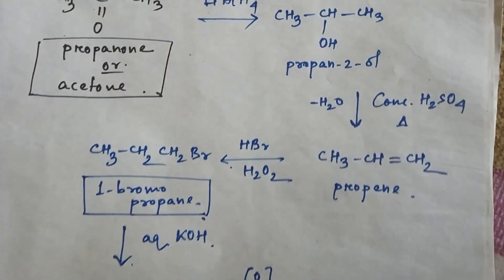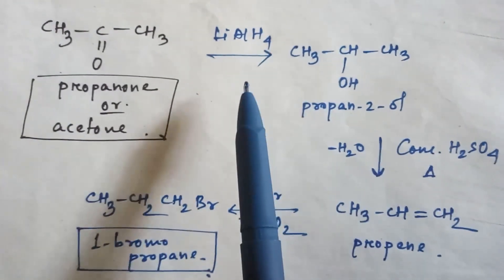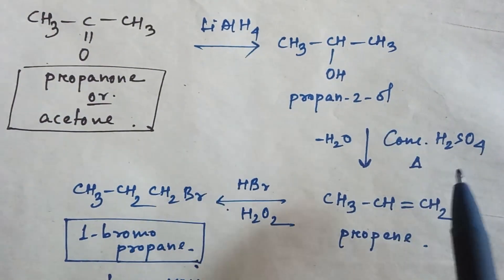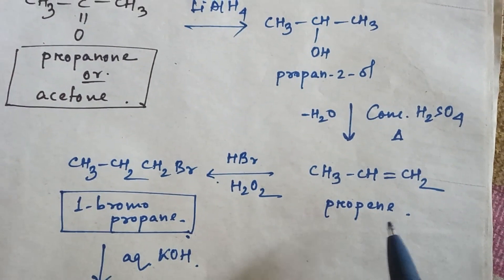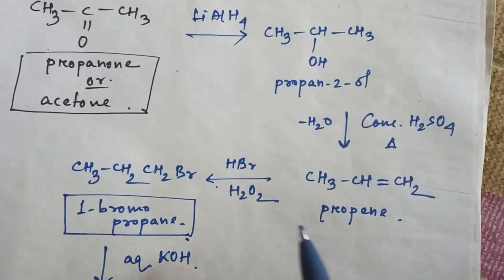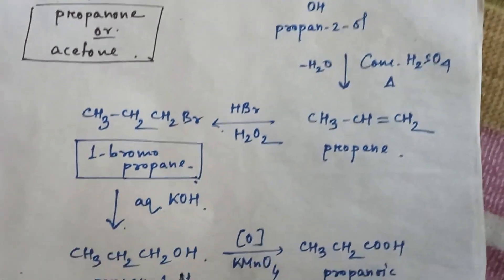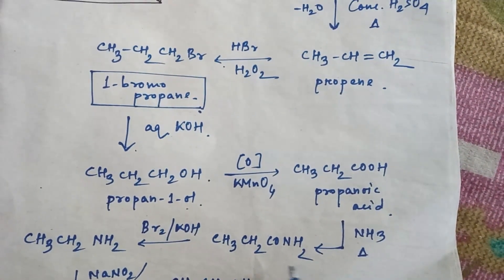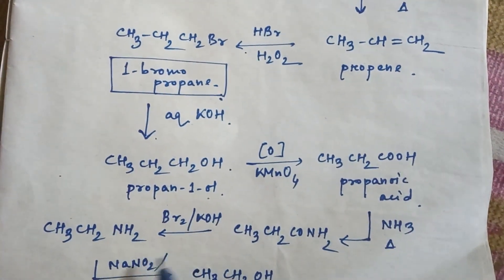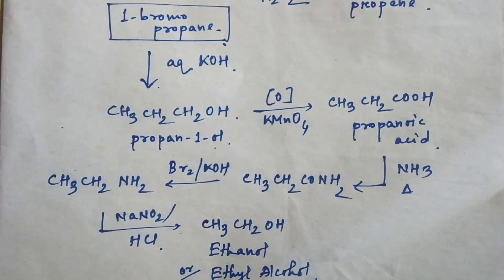So this is the reverse process from acetone to ethanol. First from acetone, use lithium aluminum hydride and do reduction — the ketone converts into alcohol. Then use concentrated H2SO4 and heat — water is removed and you get propene from the alcohol. Then use HBr in presence of H2O2 via anti-Markovnikov rules — you get 1-bromopropane. Then use aqueous KOH — bromine converts into OH. Then do oxidation — alcohol converts into acid. Then use ammonia and heat to get amide. Then do Hofmann bromide degradation to get amine. Then NaNO2 and HCl — ultimately you get your desired product, ethanol.